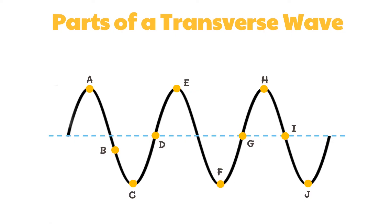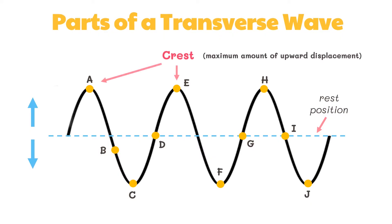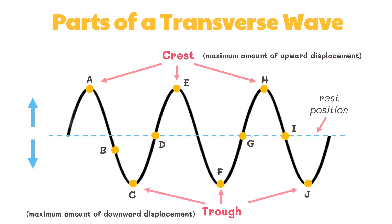Take a look at this diagram of a transverse wave. The dashed line drawn through the center of the diagram represents the equilibrium or rest position of the string — the position the string would assume if there were no disturbance moving through it. Once a disturbance is introduced, the particles of the string begin to vibrate upwards and downwards. At any given moment, a particle on the medium could be above or below the rest position. The crest of a wave is the point on the medium that exhibits the maximum amount of positive or upward displacement from the rest position. Points C, F, and J on the diagram represent the crests of this wave.